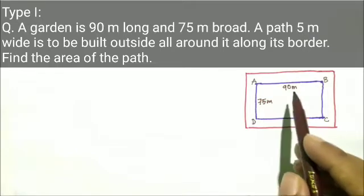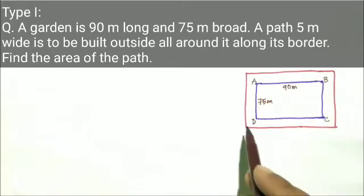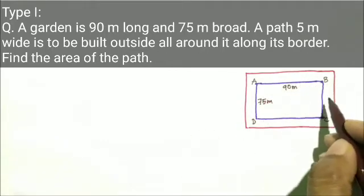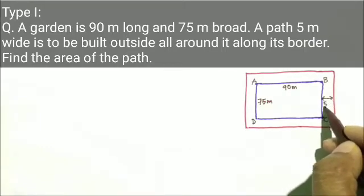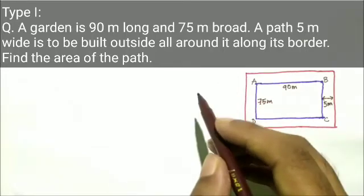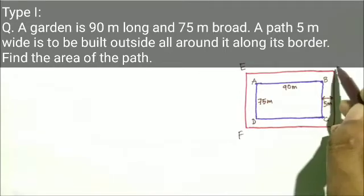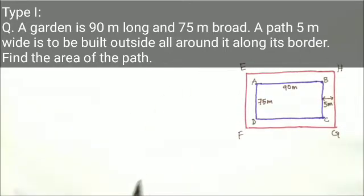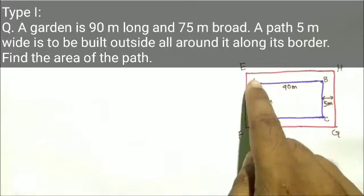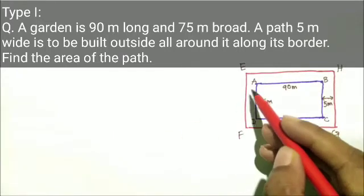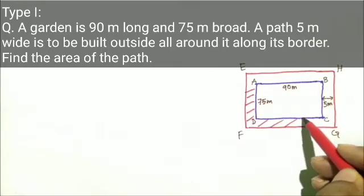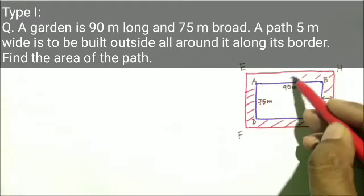This is the garden. Outside the garden, we will build a path, and the width of that path will be 5 meters. We will name the inner rectangle ABCD and the outer rectangle EFGH. We need to find the area of the path, which is this shaded region between the two rectangles.